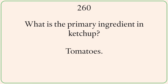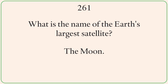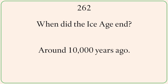What is the primary ingredient in ketchup? Tomatoes. What is the name of the Earth's largest satellite? The Moon. When did the Ice Age end? Around 10,000 years ago.